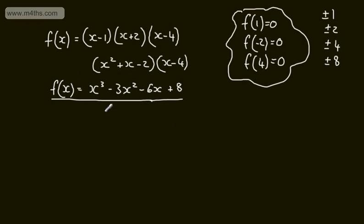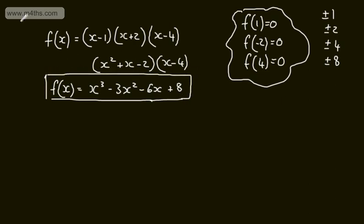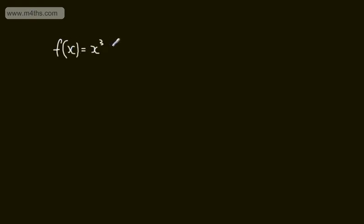Let's say we were given this cubic equation and asked to factor it fully. Pretending we haven't seen it before, we take the constant of 8 and look at all its potential factors — that's why we consider those values. So we have f(x) equals x cubed minus 3x squared minus 6x plus 8.